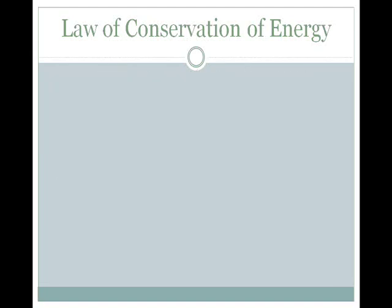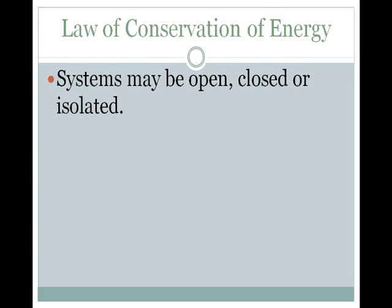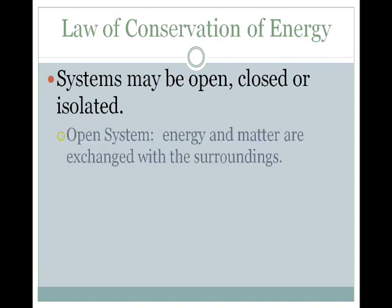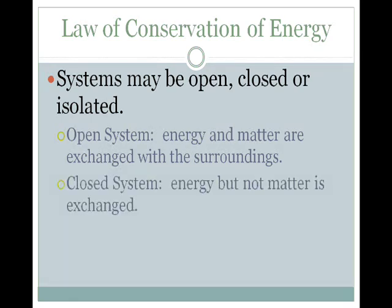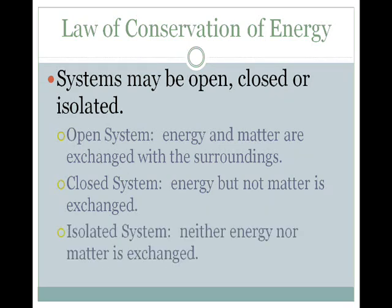In regards to the law of conservation of energy, there is a way to see if energy is conserved, and that's when you use an isolated system because energy can't be released in an isolated system. To explain how sometimes you think you've lost energy, we're going to look at different types of systems. An open system is when energy and matter are exchanged with the surroundings. A closed system is where energy can be exchanged but not matter. And in an isolated system, neither energy nor matter is exchanged.